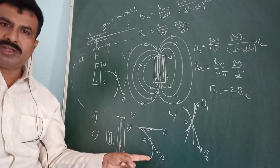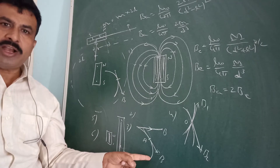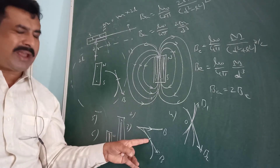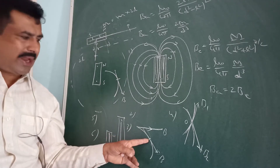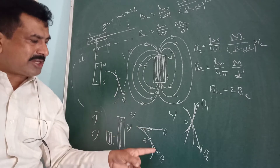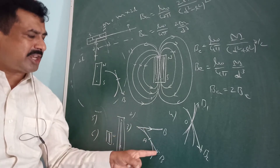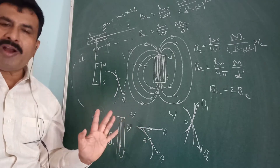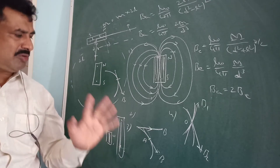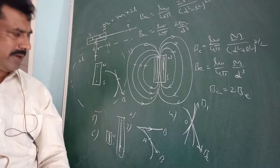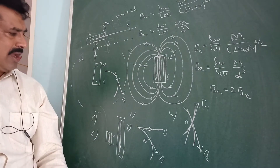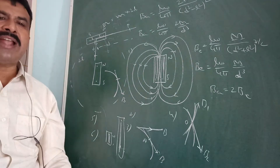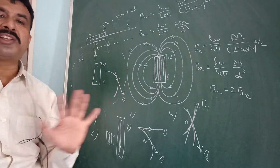Magnetic field lines are always curved and form a continuous loop. The fourth property: magnetic field lines never intercept each other.